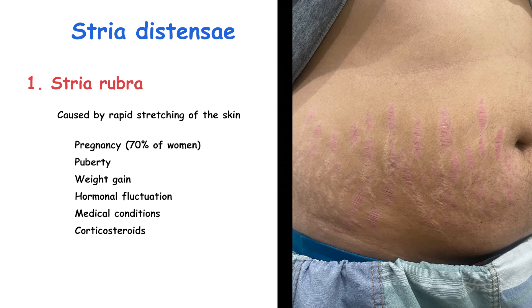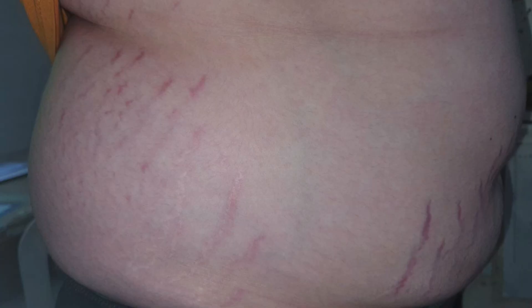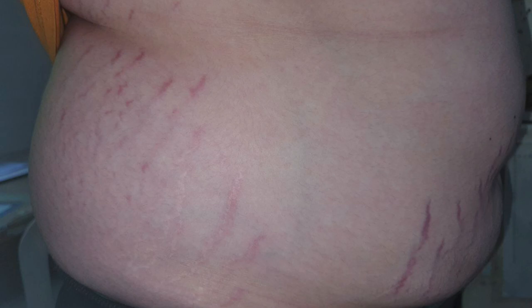These striae are red, pink, or purple due to visible vessels through the skin. They may be slightly raised and cause itching, or sometimes they may be painful. Stria rubra forms when the skin is stretched beyond its elastic limit, causing the collagen fibers to tear. They are usually linear, vary in length and width, and have a wrinkled appearance.